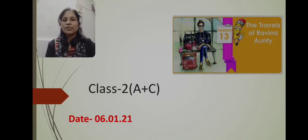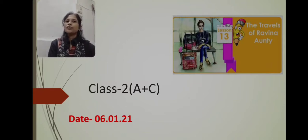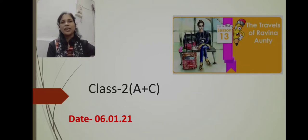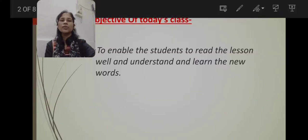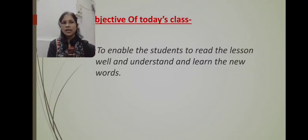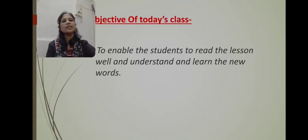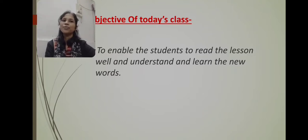In this chapter we are going to learn about a travel story of Raveena Auntie, and she will be sharing her stories to two little girls, Preeti and Preya. The objective of today's class is to enable the students to read the lesson well and understand and learn the new words. We will be discussing the new words along with pictures, and I will also be reading the lesson for you.